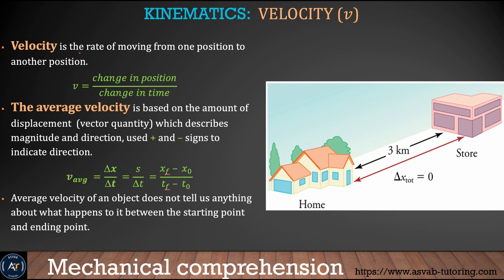Velocity is the rate of moving from one position to another position. By definition, the vector is change in position over time. Say like this is your home and you're going to a store three kilometers away. If you start driving from home to the store and divide the total distance by how long it took, you get a number — that is called velocity. The unit of velocity can be meters per second or feet per second.